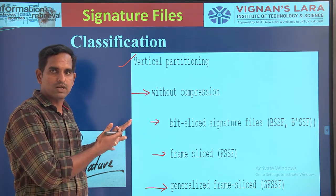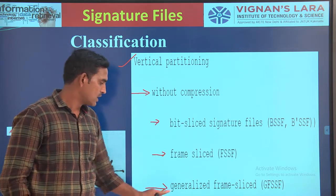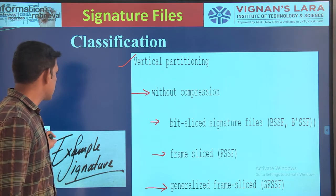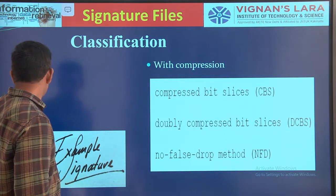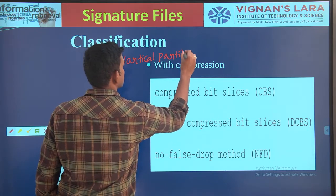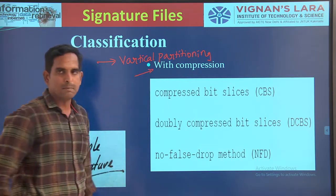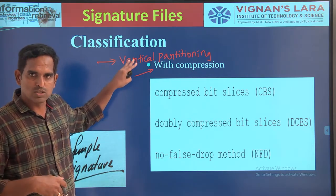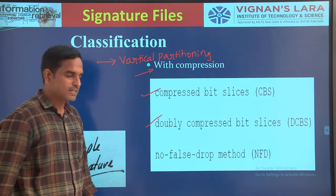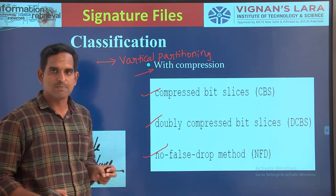You have to remember these particular files because you are going to learn each one: bit sliced signature files, frame slices, and generalized frame slice signature files. You are going to look at all these signature files one by one in further sessions. The next classification is the same vertical partitioning but also implementing compression. In a signature file that has both vertical partitioning and compression, we have three things: compressed bit slices, doubly compressed bit slices, and the no false draw method.